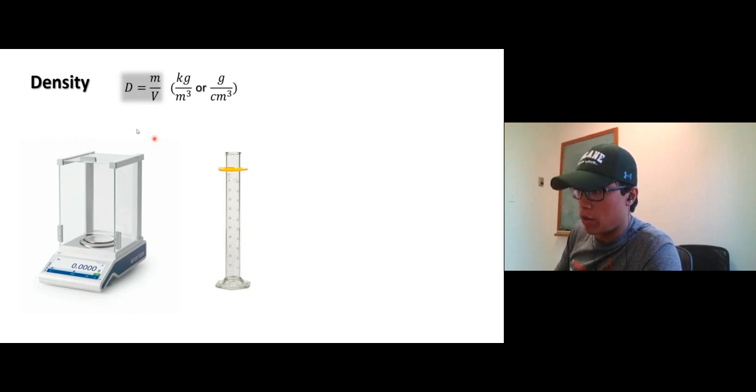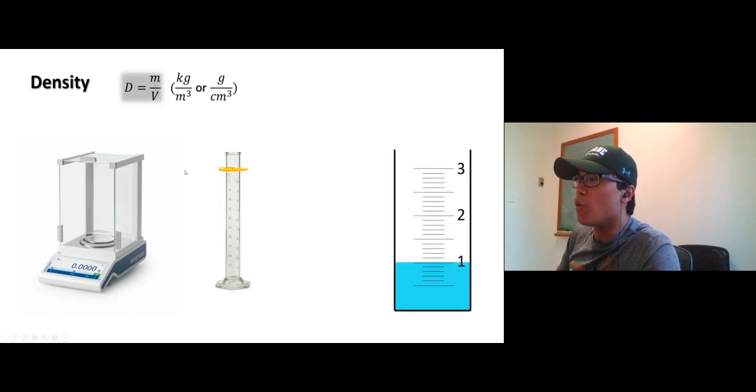To find the density of an object, you need to find the mass using a scale. For the volume, the old method is water displacement - drop it into water in a graduated cylinder and see the water difference. That's how we measure the volume of an object.